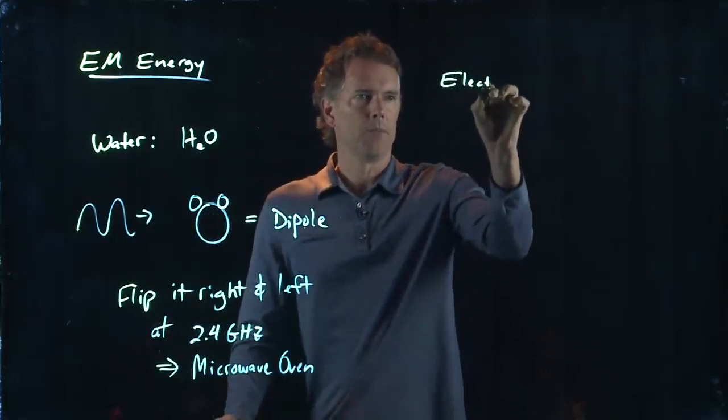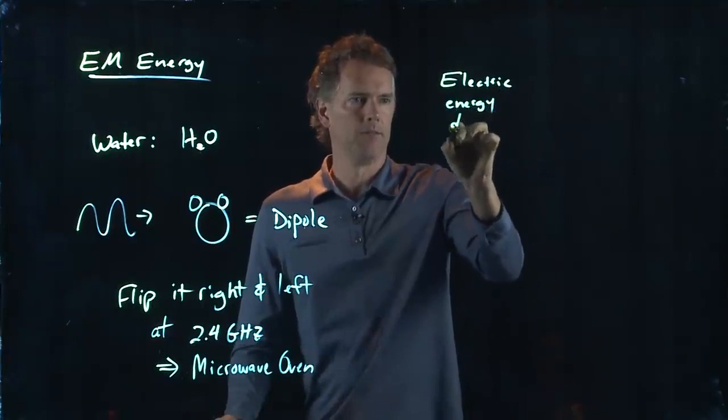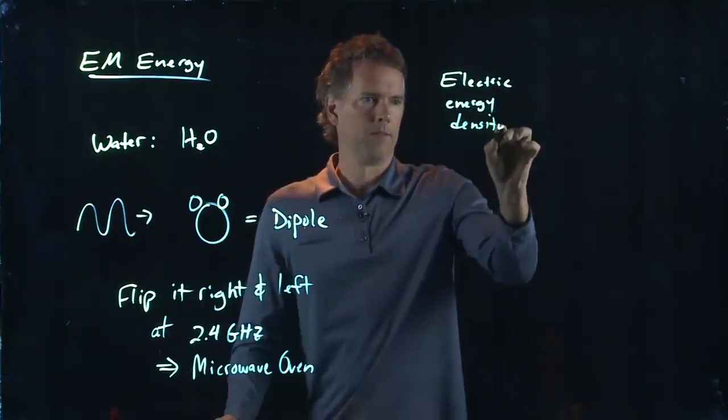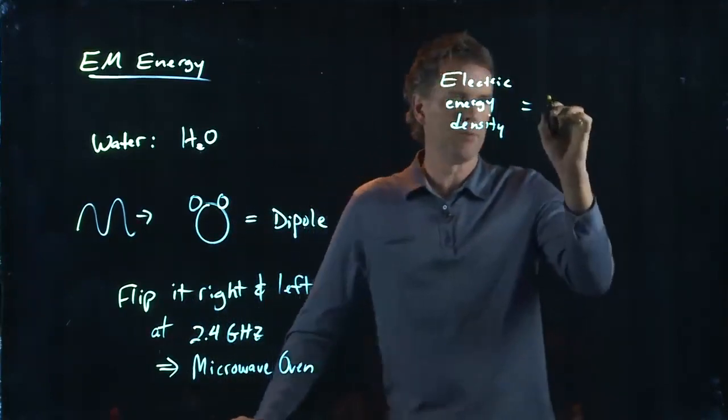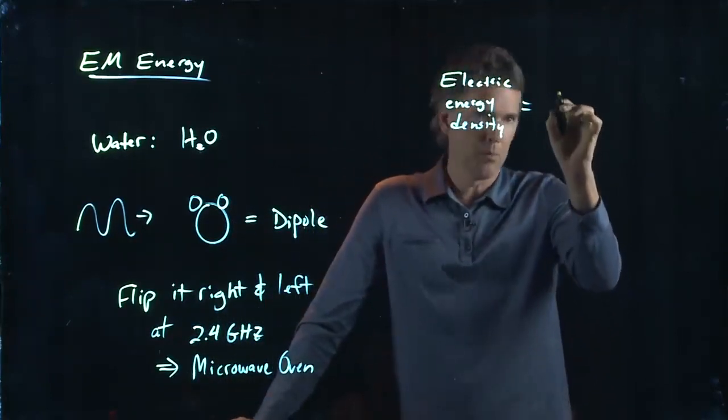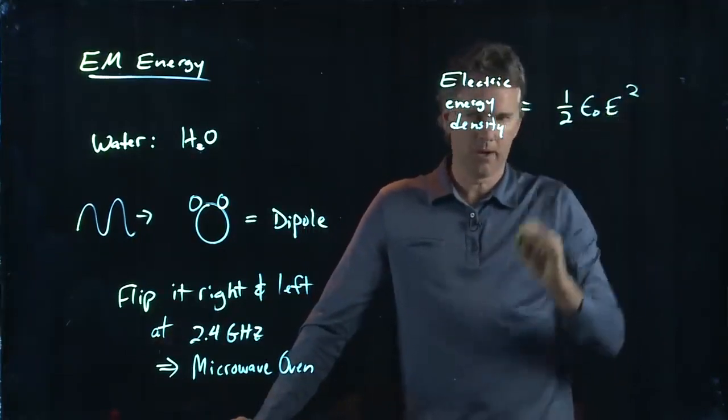which we talked about before. And the electric energy density was the following. Remember, energy density is just energy per volume. And we ended up with one half epsilon knot E squared.